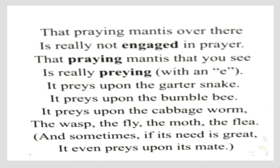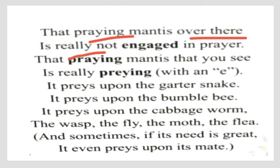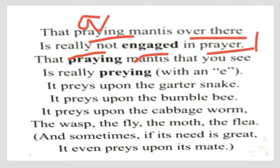The poem begins: 'That praying mantis over there is really not engaged in prayer.' Here, 'there' and 'prayer' form the rhyme, so this is the A rhyme. The rhyme scheme of this stanza is being analyzed.